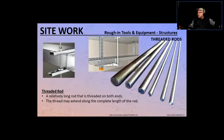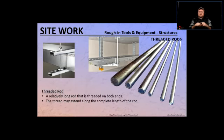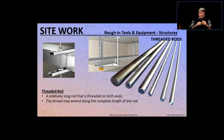Threaded rods — what are they? It's a relatively long rod that is threaded at both ends, or sometimes the thread runs all the way through. Go to a Home Depot, Lowe's, Rona, or any hardware store and look at their threaded rod section. You'll see different lengths and different diameters. They're very popular — you can cut them to make them shorter and join them with couplers.